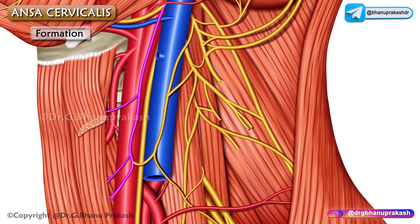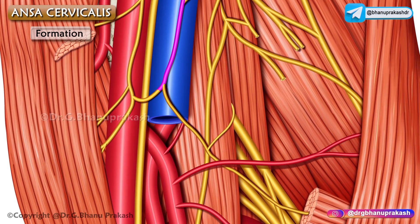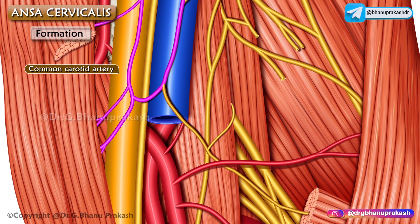Now let us talk about the inferior root, which is also called the descending cervical spinal nerve. As this root descends, it winds around the internal jugular vein and continues antero-inferiorly to join the superior root in front of the common carotid artery to form a loop.